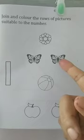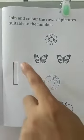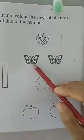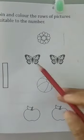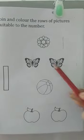Join and color the rows of pictures suitable to the numbers. This is number 1. How many butterflies? 1. 2. How many butterflies? 2.